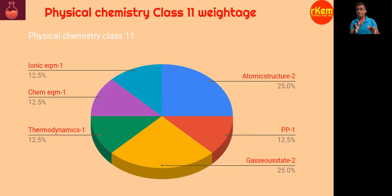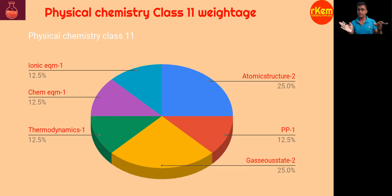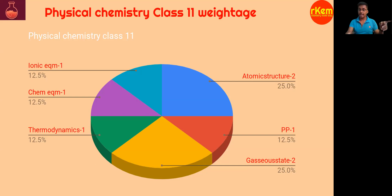Chemical equilibrium: just KP, KC, and Le Chatelier's principle — theory-based question. Thermodynamics: just the delta U and delta H relation, and CP and CV. If you read these definitions and remember the formulas, they ask very simple questions. In total, that is 2 + 1 + 2, giving 5 plus 3 — 8 questions from physical chemistry class 11.